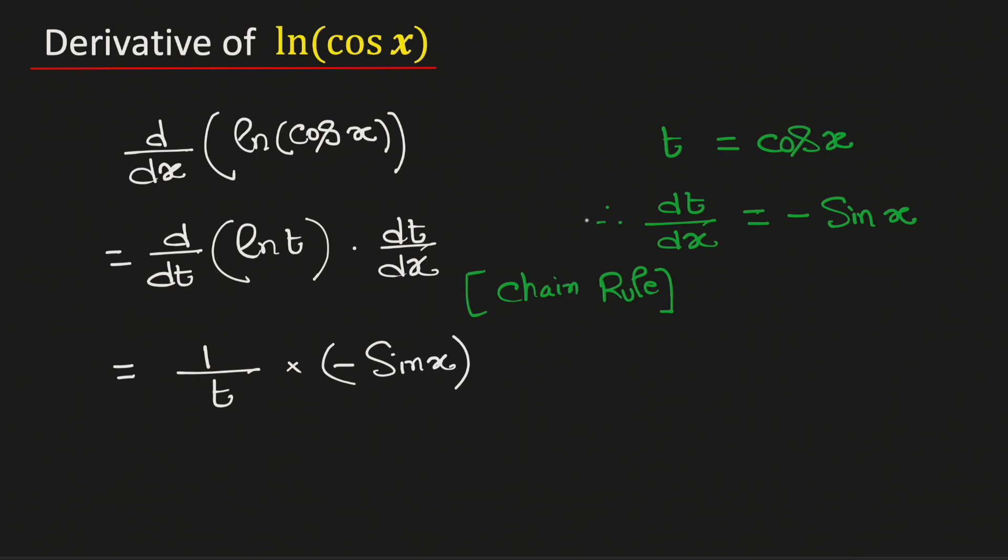If we put the value of t, which is equal to cosine of x, this will be equal to negative sine x divided by cosine of x, and this is same as negative tan x.